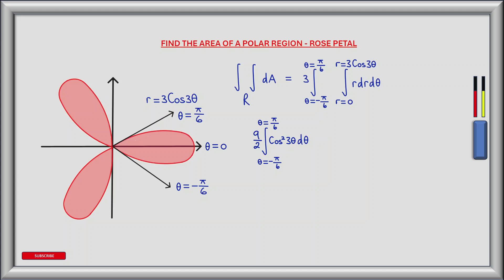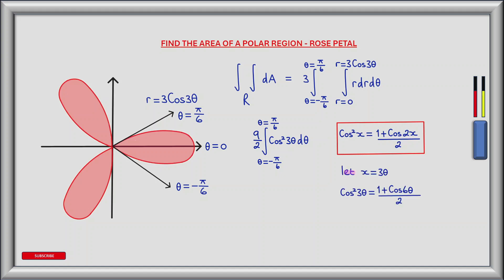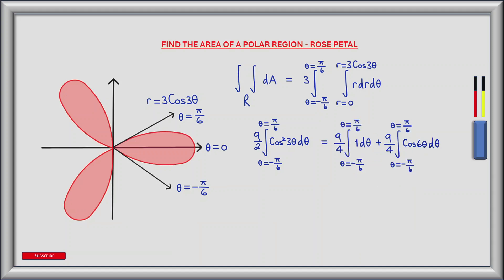We can now work on the outer integral, which is 9 over 2 multiplied by the integral from theta equals minus pi over 6 to theta equals pi over 6 of cos squared 3 theta d theta. To evaluate this we use the trig identity cos squared x equals 1 plus cos 2x all divided by 2. Letting x equal 3 theta, we have cos squared 3 theta equals 1 plus cos 6 theta all divided by 2. This transforms our integral into two more easily integrated integrals.